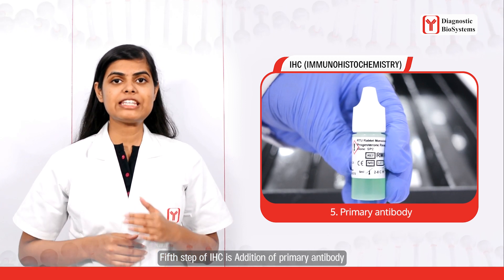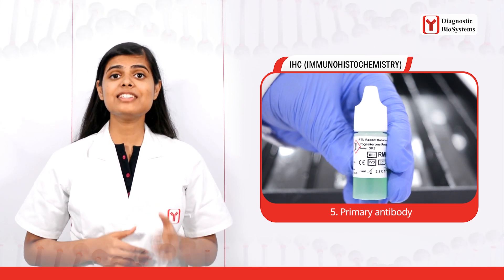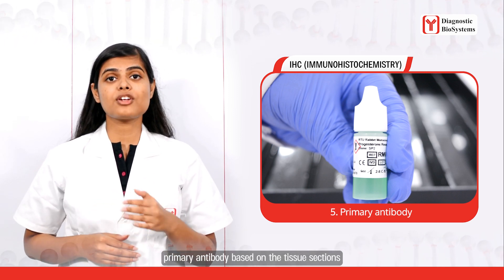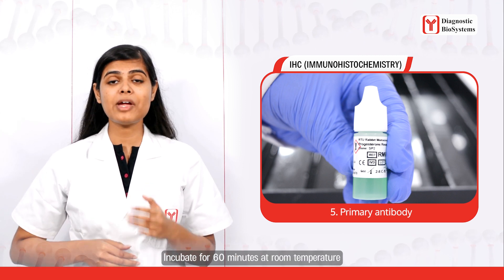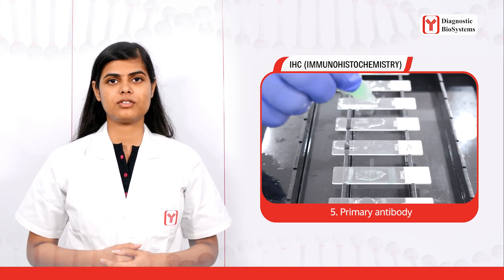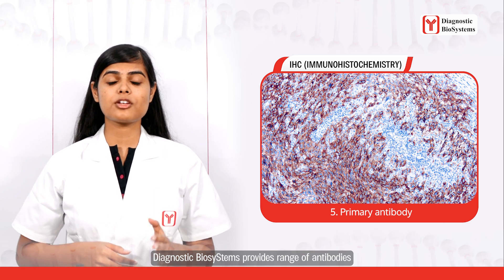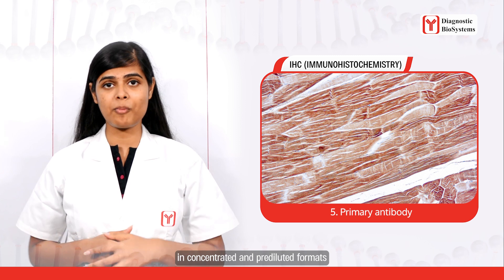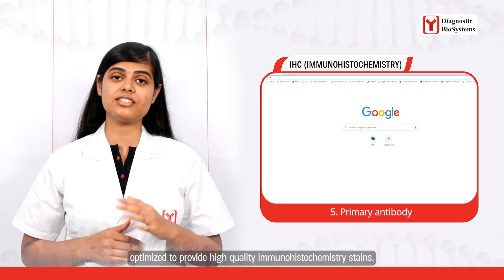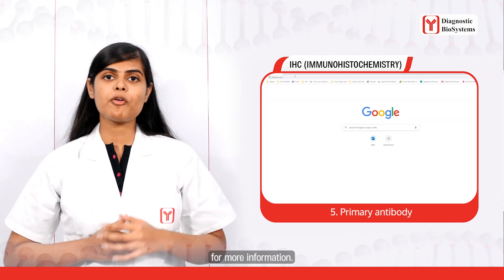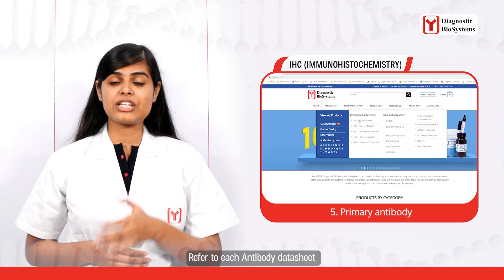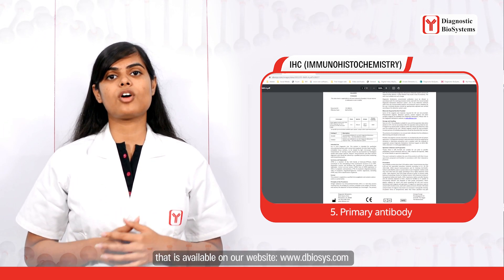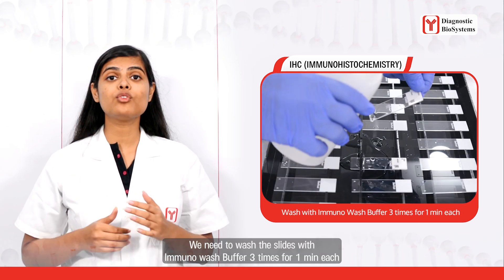The fifth step is addition of primary antibody. Add 100 to 150 microliters of primary antibody to the tissue sections and incubate for 60 minutes at room temperature. Diagnostic Biosystems offers a wide range of antibodies in concentrated as well as pre-diluted formats, optimized for high quality IHC stains. For more information, refer to each antibody data sheet available on our website at www.dbiasys.com. Wash the slides with immunowash buffer three times, one minute each.